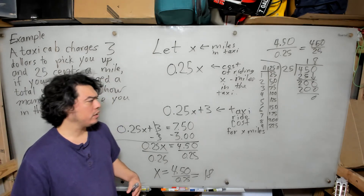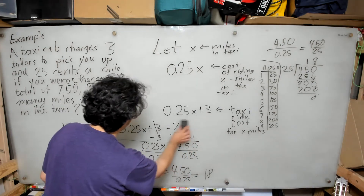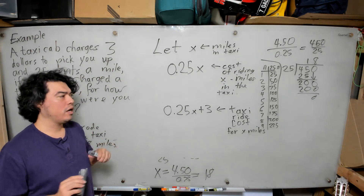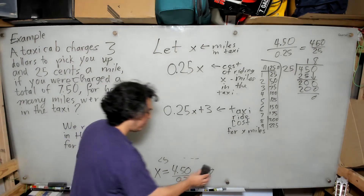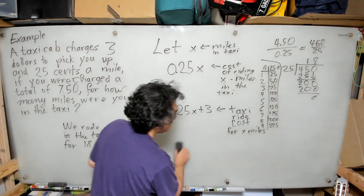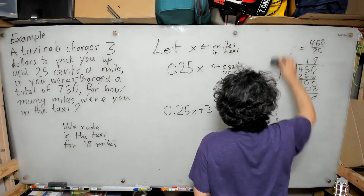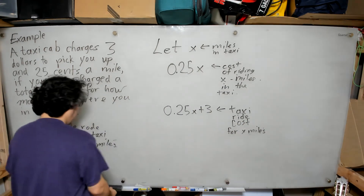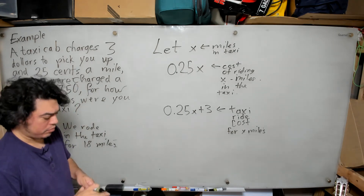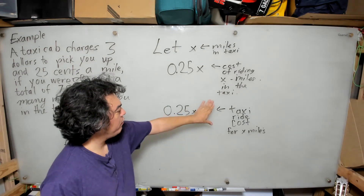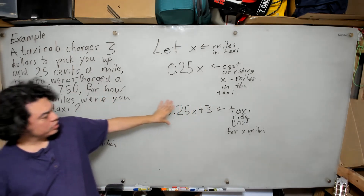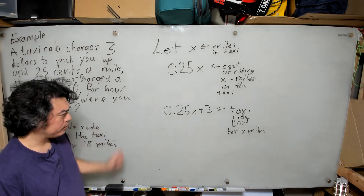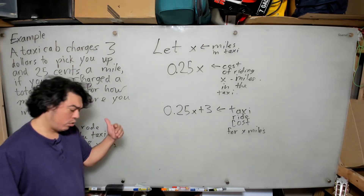Before we finish, I want to foreshadow a discussion we'll have later. Strictly speaking, the problem is solved and you don't have to watch the rest. But I want to point out something about notation that will become more important over time. We've agreed that the expression 0.25x + 3 represents the cost of the taxi ride as described in the problem.